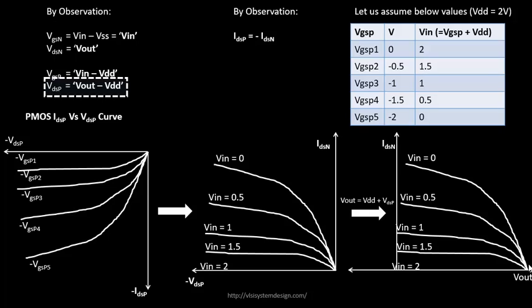At output voltage = 0, you see exactly zero current — but this is true only when PMOS is in combination with NMOS to form a CMOS inverter. Things become a bit different when PMOS is taken out of the CMOS inverter and analyzed independently. We are talking about the situation where PMOS is clubbed with NMOS to form a CMOS inverter.